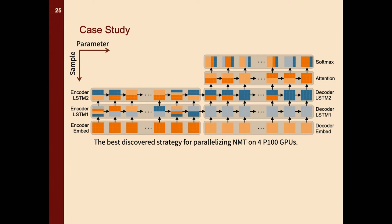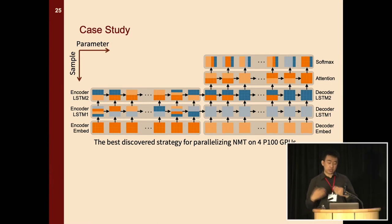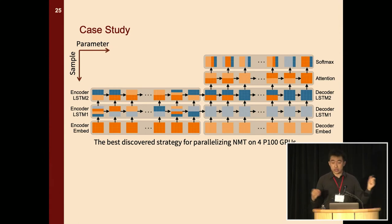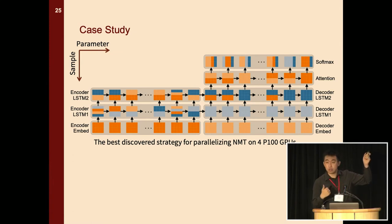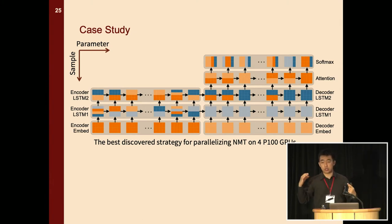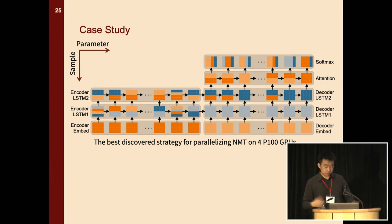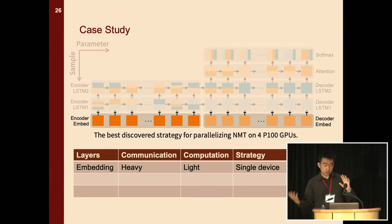One question you may have is why the best strategy found by FlexFlow is faster than baselines. To answer this, we do a case study on the best discovered strategy for parallelizing Google's neural machine translation model on four P100 GPUs. Each square in the figure shows how to parallelize a single operator. For this recurrent neural network, you can see green rectangles where operators in the same green box share parameters — so you also need to synchronize gradients among those operators.